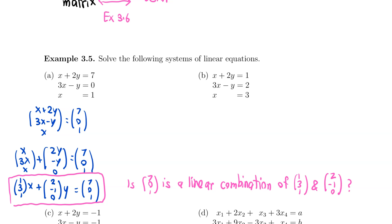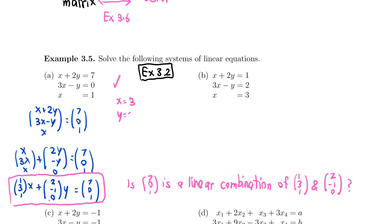If (7, 0, 1) is a linear combination of these two vectors, then that means I can find x and y that satisfy this equation. If it is not, then I cannot find x and y. In fact, we have seen from the earlier example 3.2 that indeed this vector (7, 0, 1) is a linear combination of these two vectors. So I can find a solution — and the solution is x = 3 and y = 2.